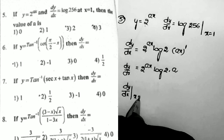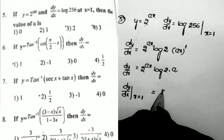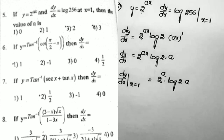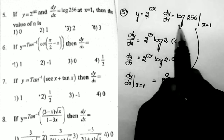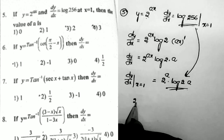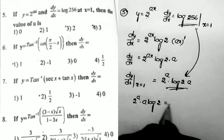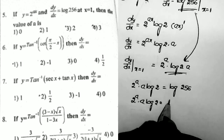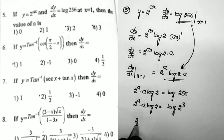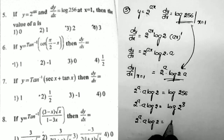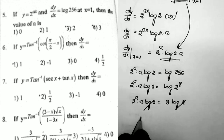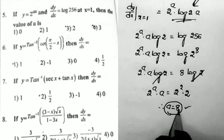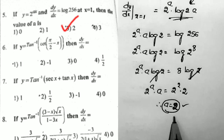We take dy/dx at x = 1, substituting to get 2^a · a · log 2. This is given equal to log 256. So 2^a · a · log 2 = log 256 = 8 · log 2. The log 2 terms cancel, giving 2^a · a = 8. Since 8 = 4 × 2 = 2² × 2, we get a = 2. That is the answer — a = 2, which is the third option.